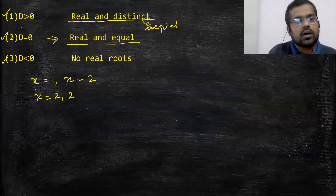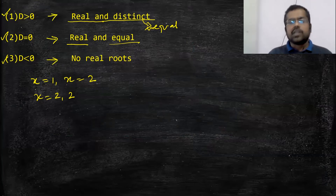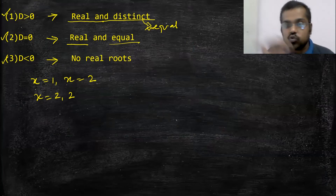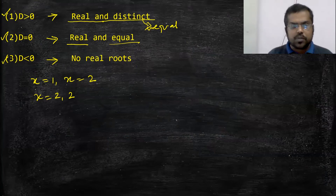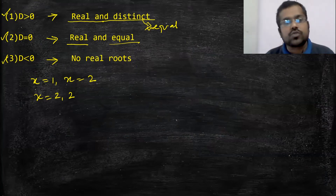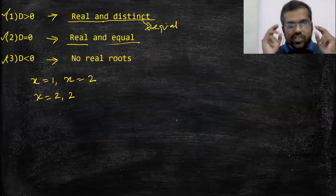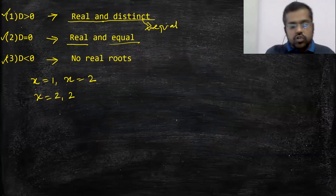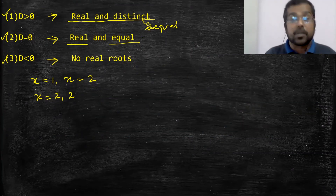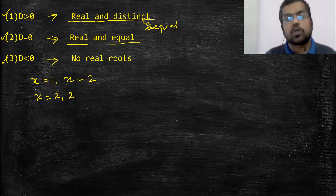Third condition — d < 0 मतलब root के अंदर वाला discriminant term negative है, तो no real roots होते हैं। यह तीनों conditions याद रखना है: d > 0 → roots are real and distinct; d = 0 → roots are real and equal; d < 0 → no real roots। इस पर questions खूब आते हैं — competitive exams में भी, board exam में भी, चाहे CBSE हो या state board।